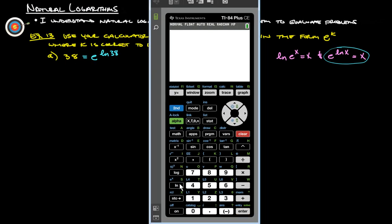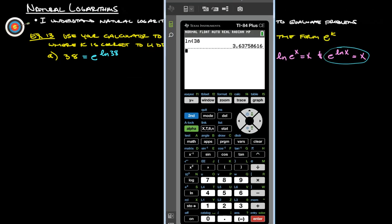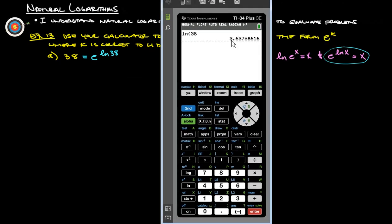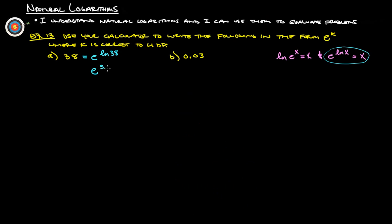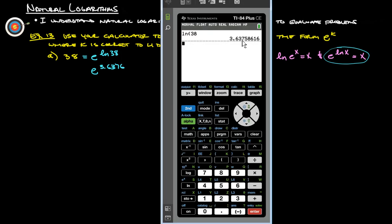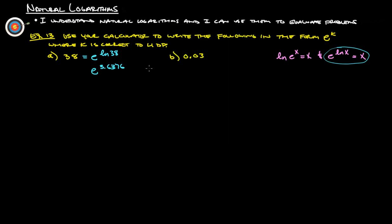So we just do natural log 38 and we get 3.6376. So E to the 3.6376. So we rewrote it in the form E to the K power.